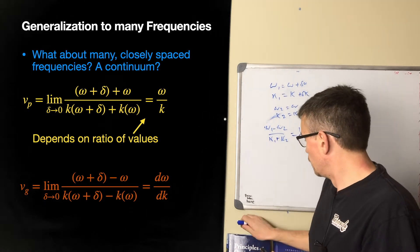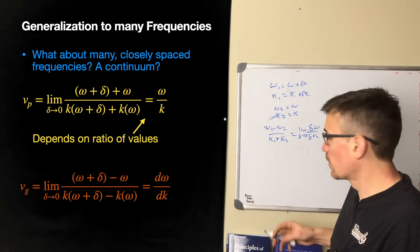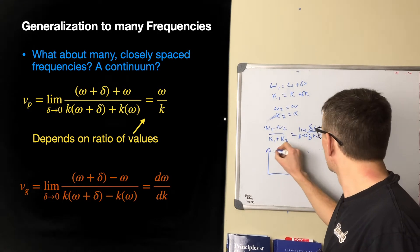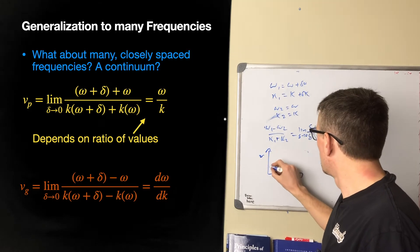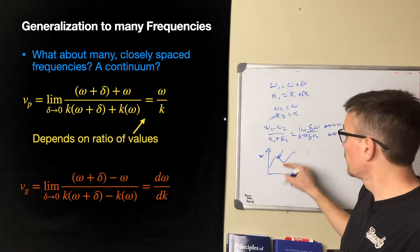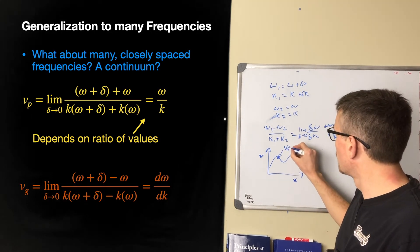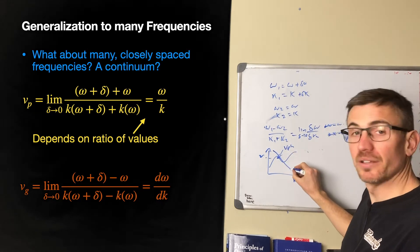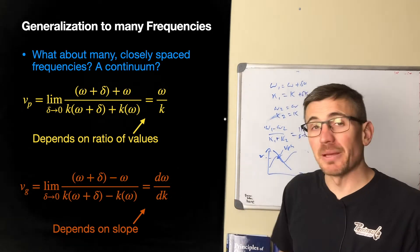On a continuous dispersion relation curve, the instantaneous ratio at a given point gives the phase velocity, while the slope, d omega by dk, gives the group velocity. So the phase velocity depends on the ratio, and the group velocity depends on the slope of the dispersion curve.